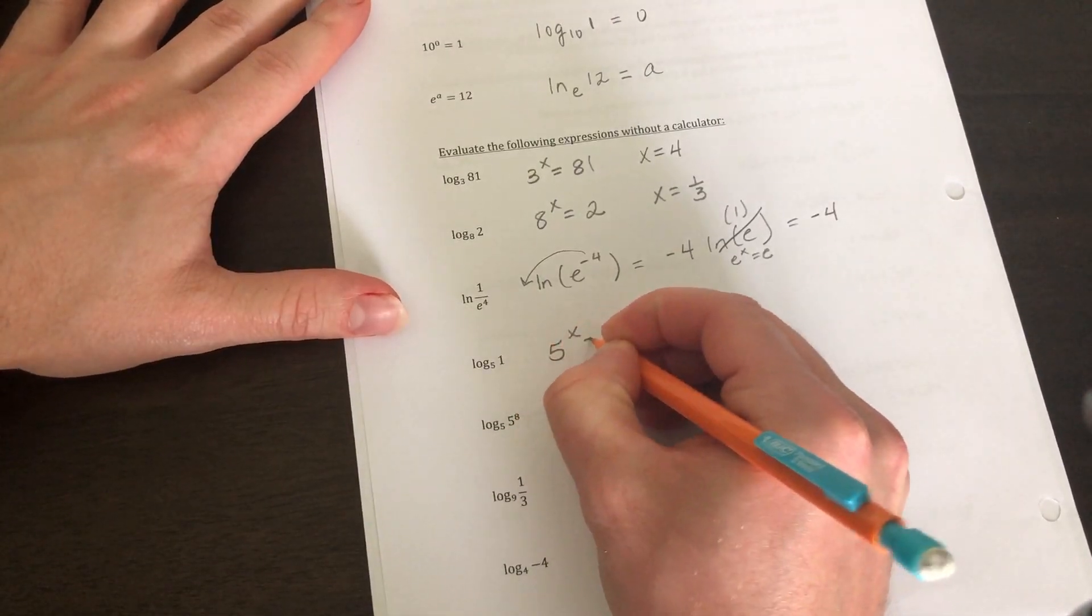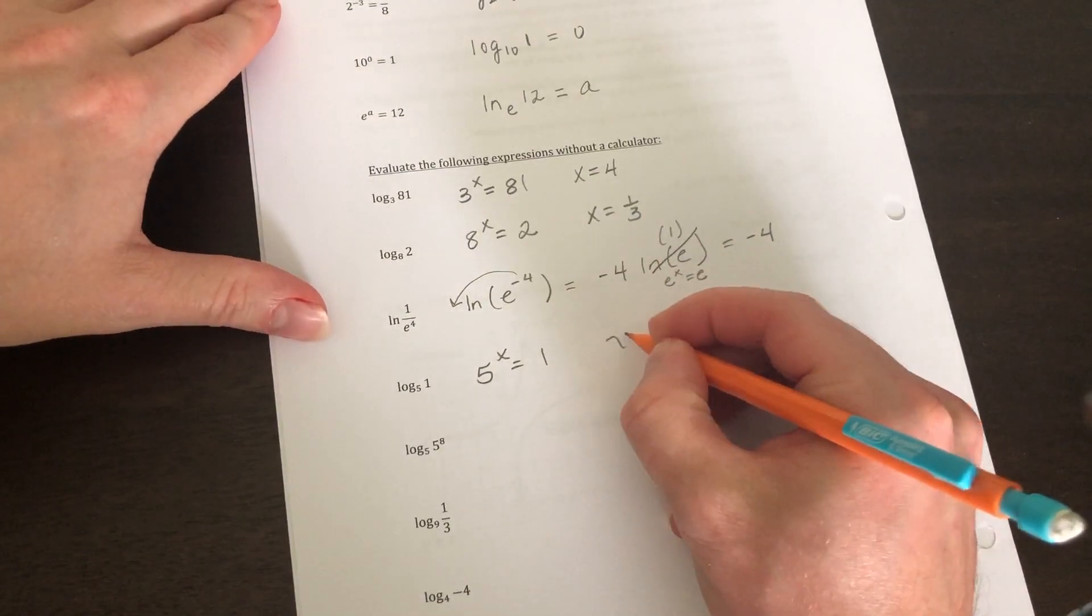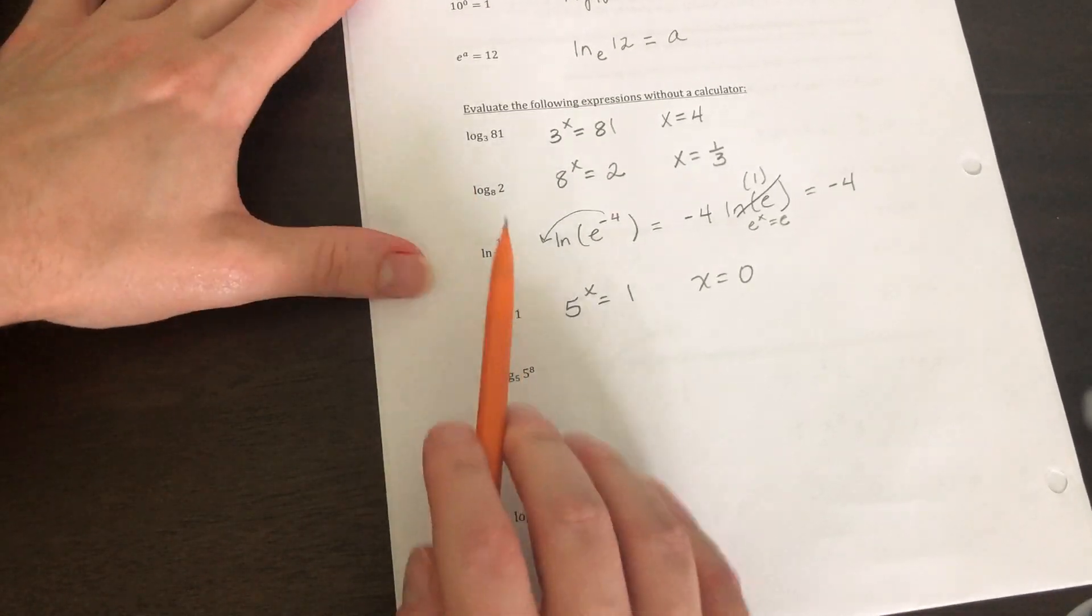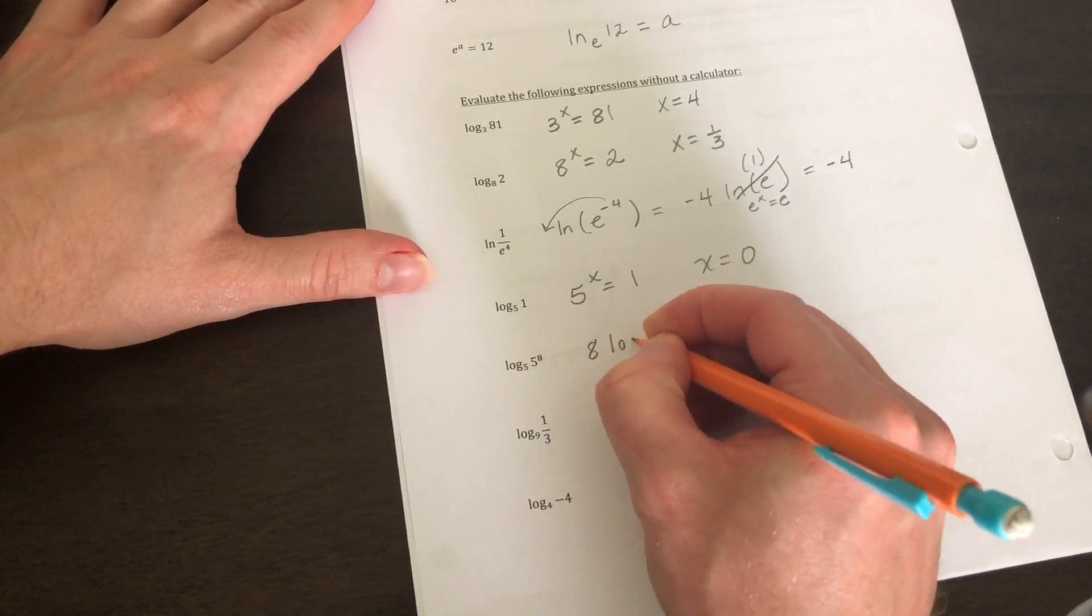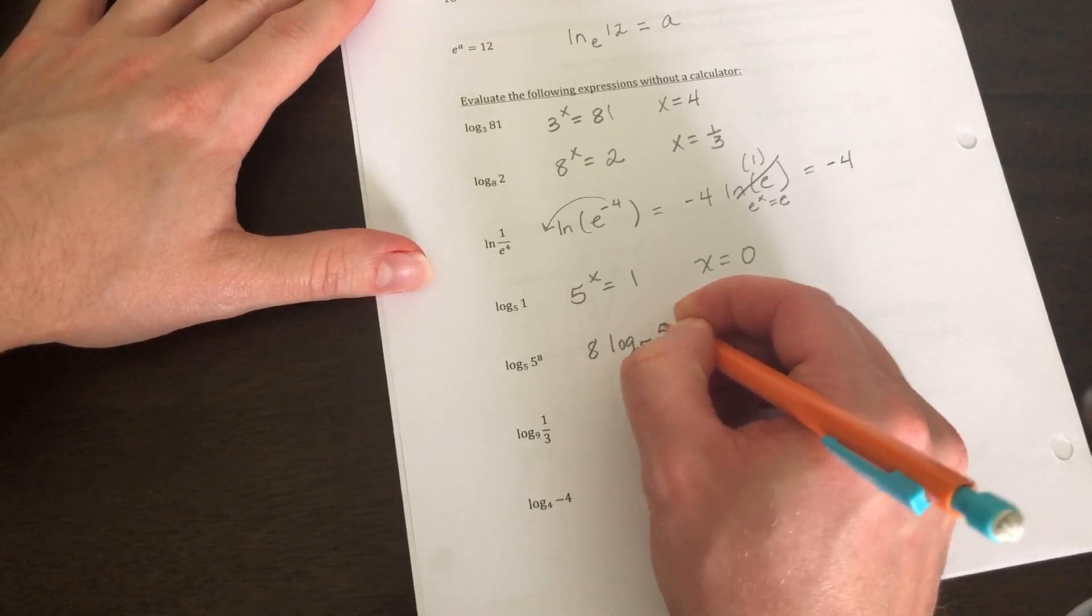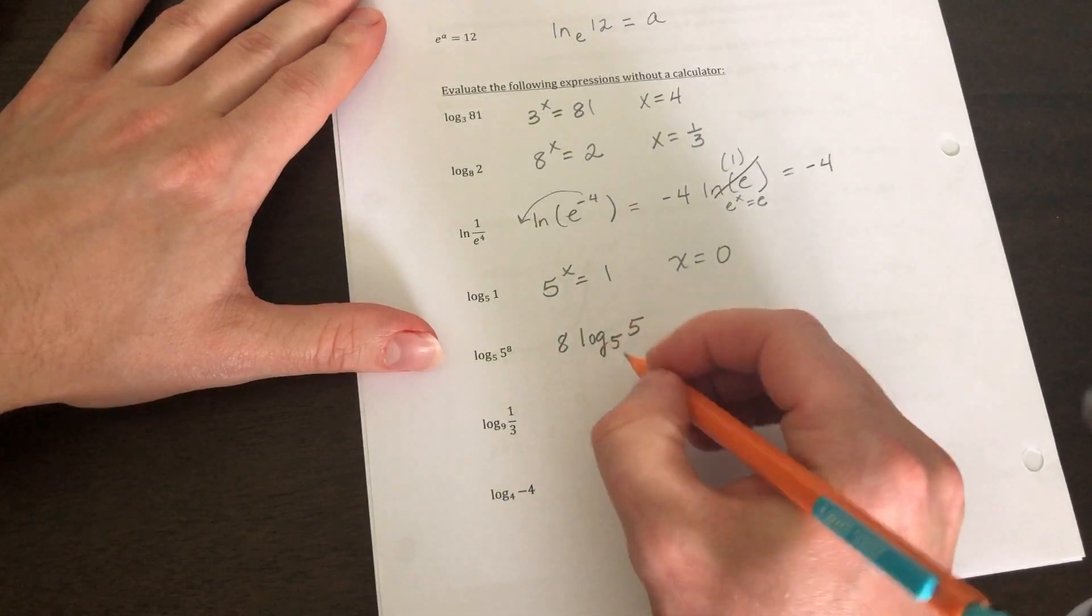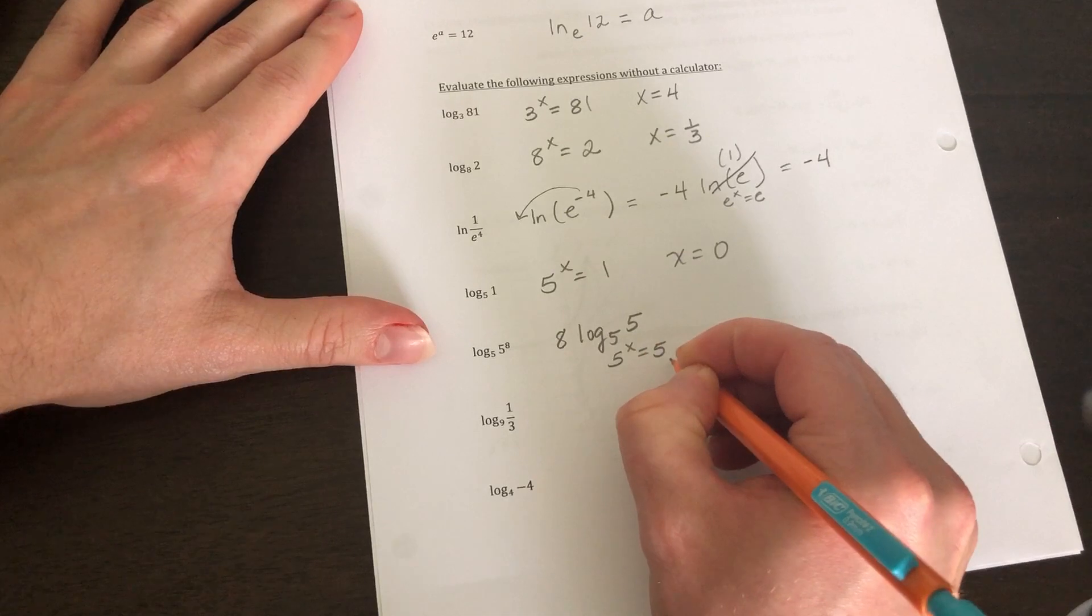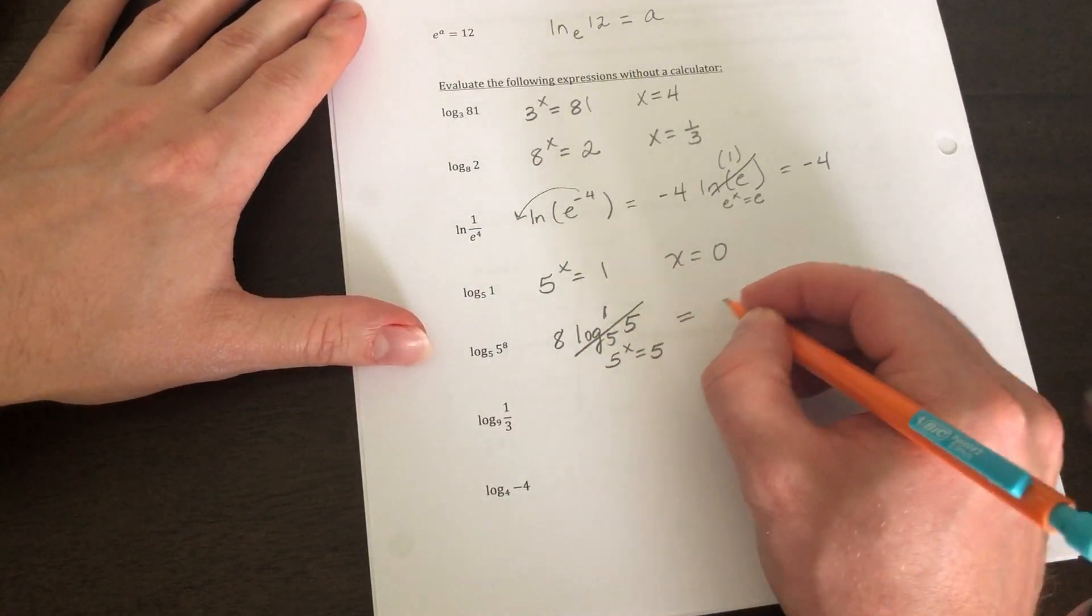The next one, five to what power gives you one? So anything to the zero power gives you one. On this one, just like this previous example up here, anytime I have a number that's being raised with the argument, I'm going to bring it in front. And we're going to take five to the x power is equal to five. So five to the one power is equal to five. So anytime your base and your argument match, it goes to one. So this whole answer goes to eight.